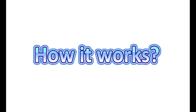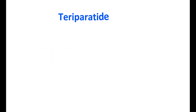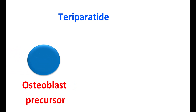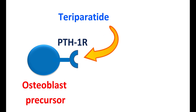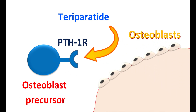Teriparatide increases the activity of parathyroid hormone receptors. Osteoblast precursors express PTH type 1 receptors, and teriparatide acts as an agonist at these receptors, stimulating their activity and resulting in greater formation of osteoblasts. As osteoblast formation increases, new bone is formed more extensively, thereby increasing bone mass. In this way, teriparatide increases bone mass and reduces fracture risk in people with osteoporosis.